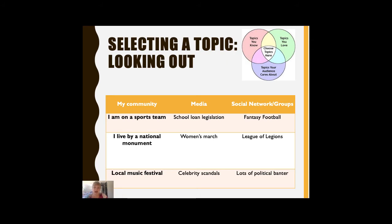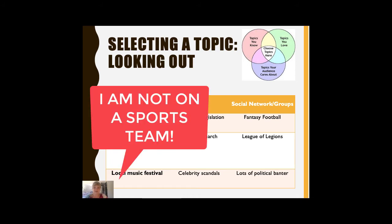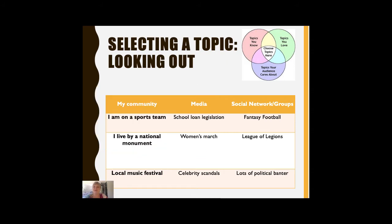Topics your audience cares about are oftentimes found by looking to our local communities or outward in the media. For example, within a community: I'm on a sports team and talk about sports, or I live next to a national monument, or maybe I attend a local music festival. Those are all events and things that happen within my community that I'm a part of, and I'm sure I could tell a good story to go along with it. From here, you can begin to imagine what any one of these topics looks like in any speech format — whether it's a story, informative, or persuasive.